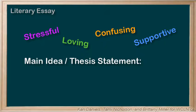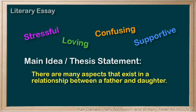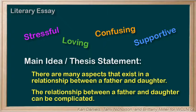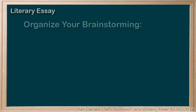It sounds complicated, doesn't it? Now that you have some ideas to describe their relationship, you can formulate your main idea — the thesis statement. What are you going to prove? Your thesis could then be something like: 'There are many aspects that exist in a relationship between a father and a daughter,' or 'The relationship between a father and a daughter can be complicated.' Then you want to organize your brainstorming into a logical outline that will support your thesis statement.